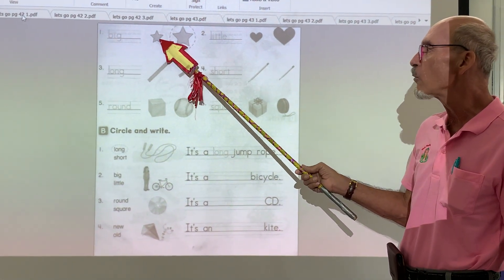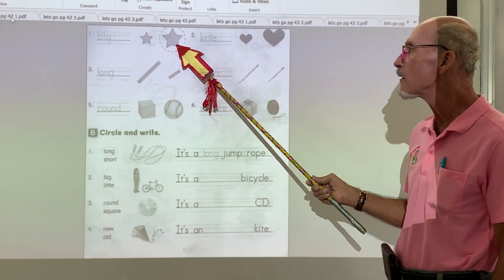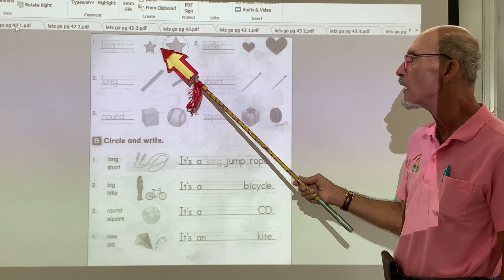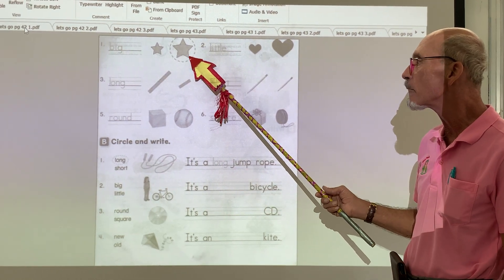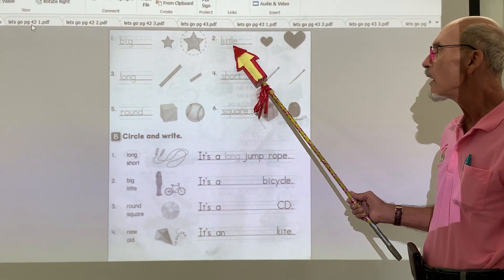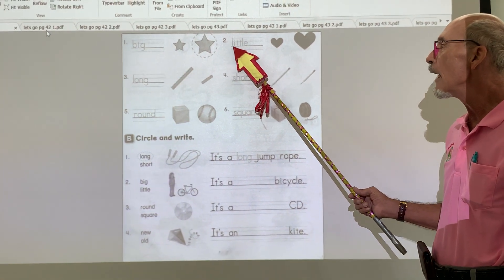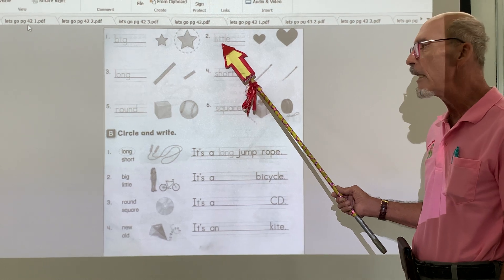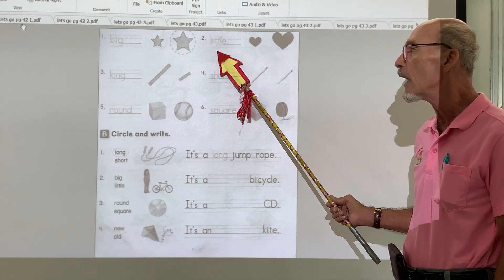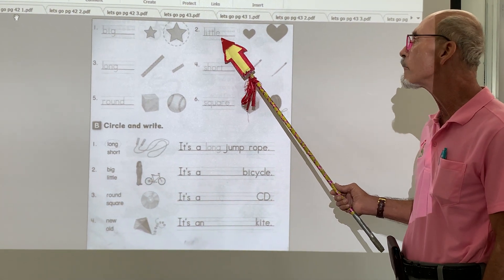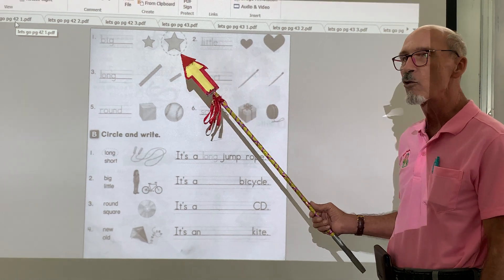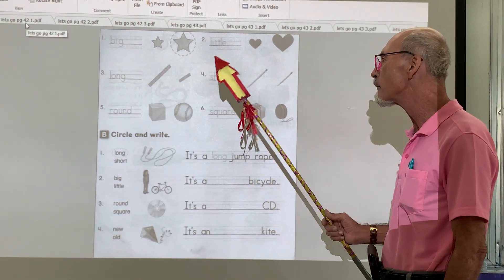This is what? Small. This is big. This is little. This is big, okay? Number two, little. L-I-T-T-L-E. Little. And which one of these is little? You want to draw a circle around that.